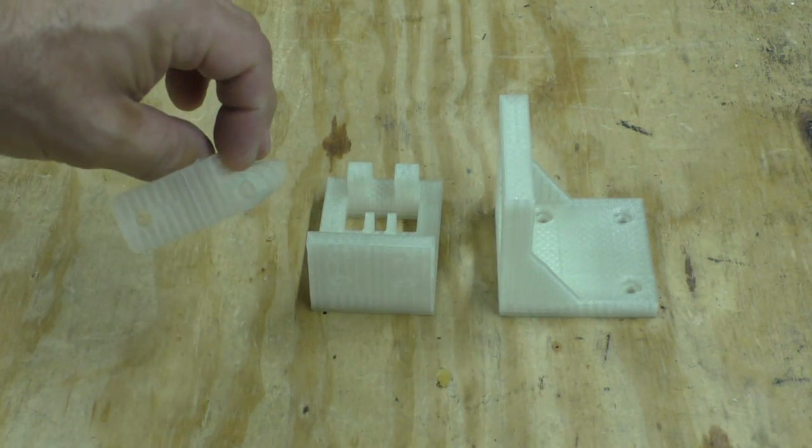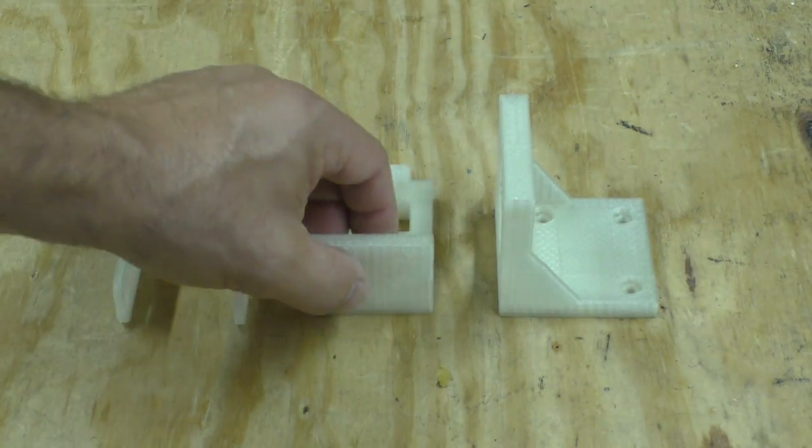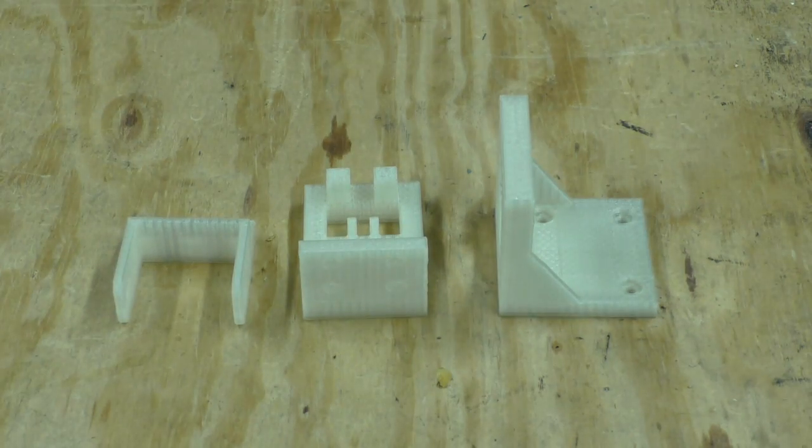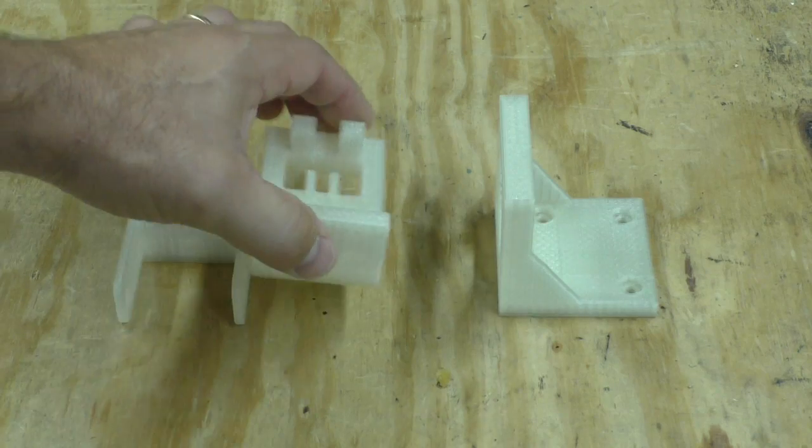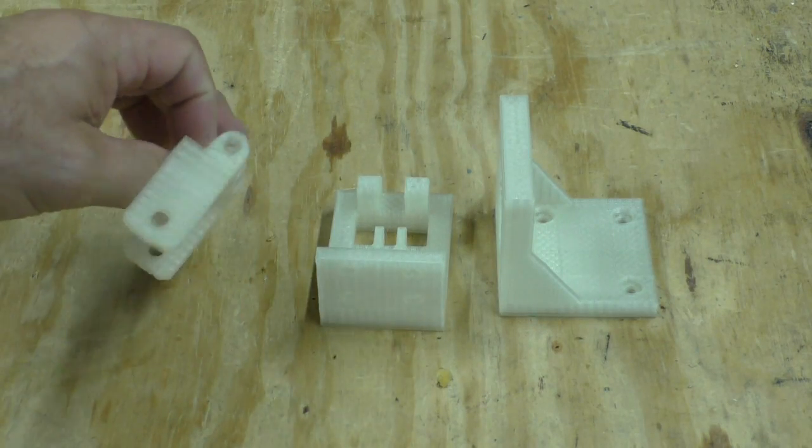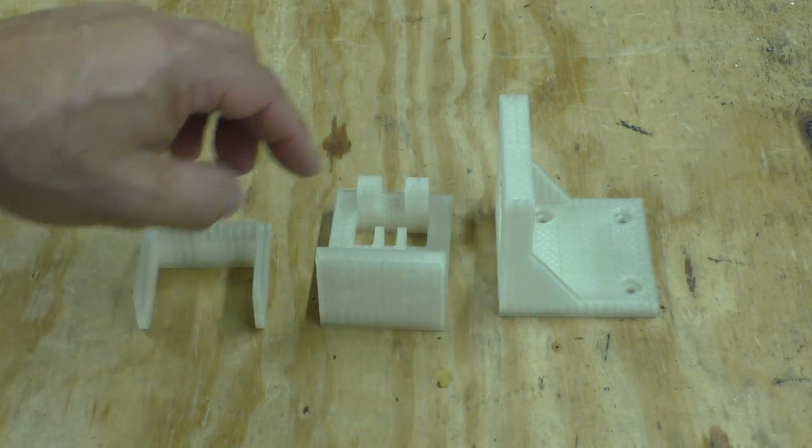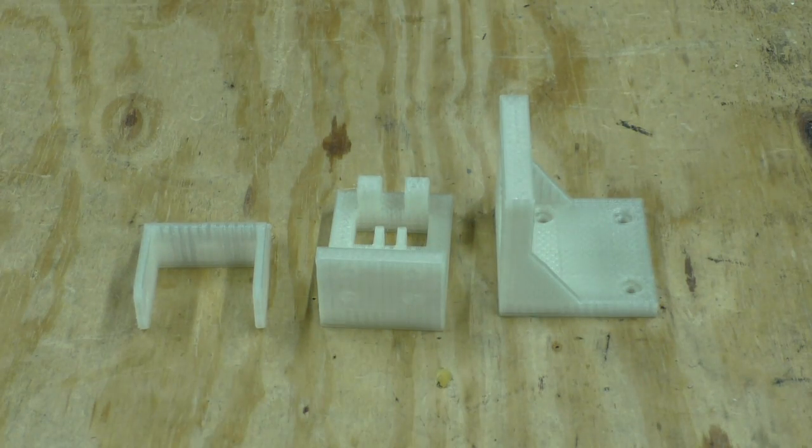These 3D printed parts are going to hold the rollers and the stepper motors together. And I had to make them a little bit smaller because my 3D printer is smaller. So I had to make three smaller pieces instead of one big gigantic piece.